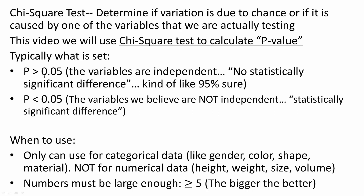If p is greater than 0.05, we typically say the variables are independent — no statistically significant difference, kind of like being 95% sure. If p is less than 0.05, we believe the variables are not independent — statistically significant difference.